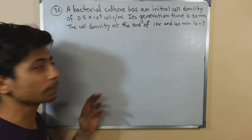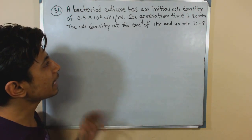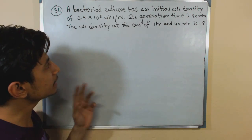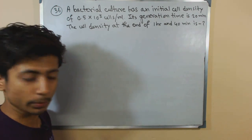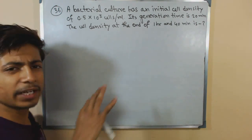.5 into 10 to the power 3 cells per ml. Its generation time is 20 minutes. The cell density at the end of 1 hour 40 minutes is? That's the question.